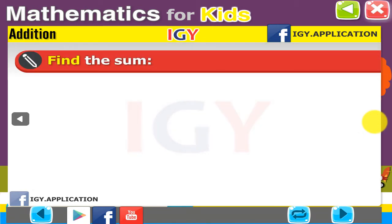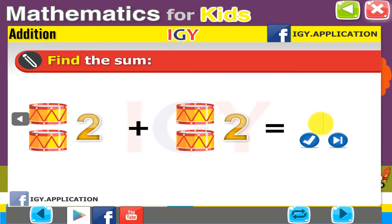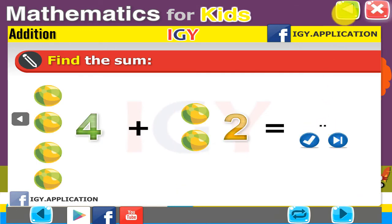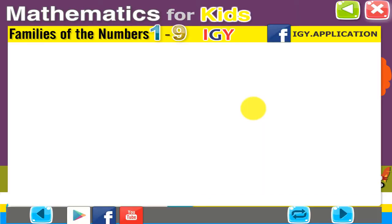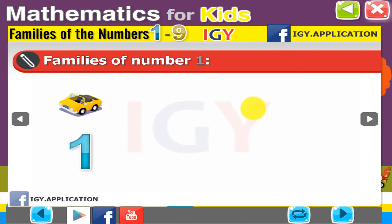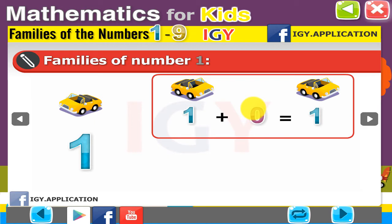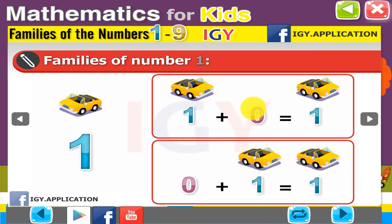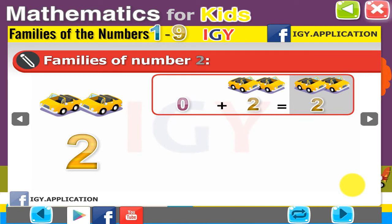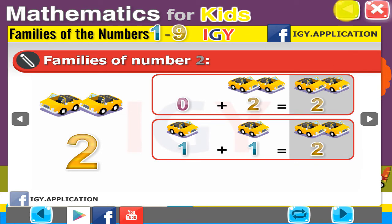Find the sum. Families of the numbers 1 to 9. Families of number 1: 1 plus 0 equals 1, 0 plus 1 equals 1. Families of number 2: 0 plus 2 equals 2, 1 plus 1 equals 2.